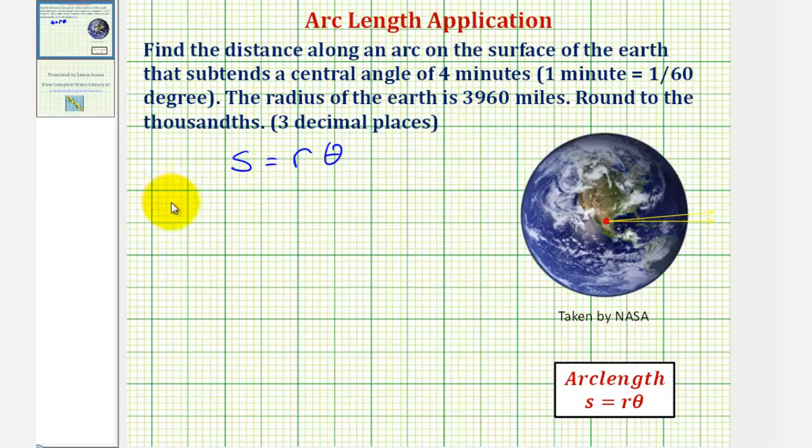So for the earth, r is equal to three thousand nine hundred sixty miles. And for this problem, the central angle is four minutes. So theta equals four minutes, which must be converted to radians.